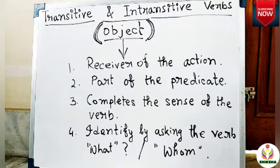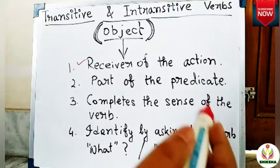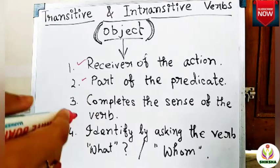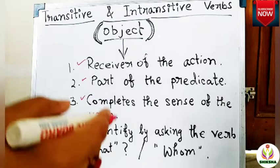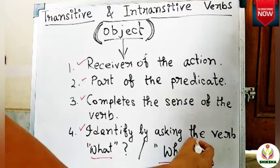Let's sum up the topic of objects. First, an object is the receiver of the action done by the subject — someone or something upon whom the action is performed. Second, it is part of the predicate, so you can find an object in the predicate part of a sentence. Third, an object completes the sense of the verb. Fourth, you can identify an object by asking 'what' or 'whom' through the verb.